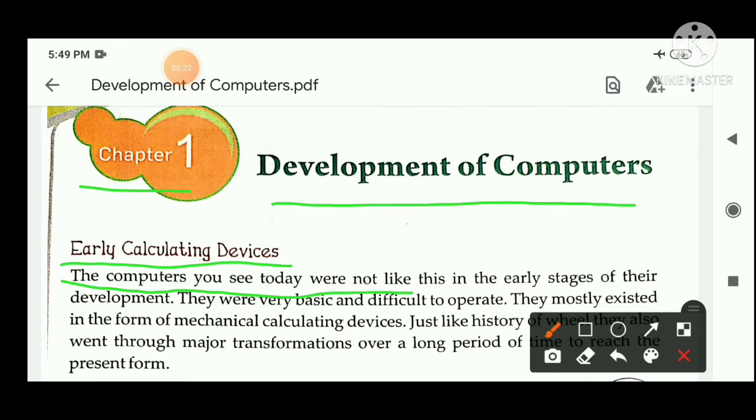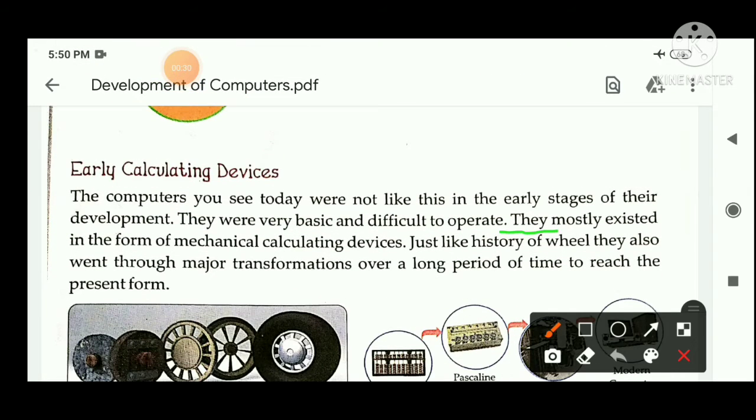The computers you see today were not like this in the early stages of their development. They were very basic and difficult to operate. They mostly existed in the form of mechanical calculating devices. Just like history of wheel, they also went through major transformations over a long period of time to reach the present form.